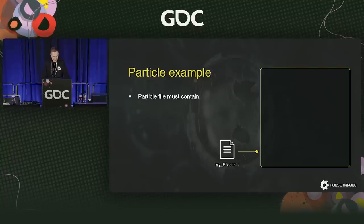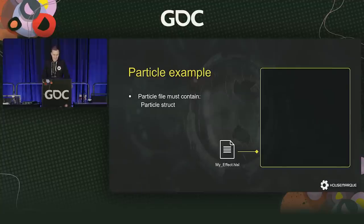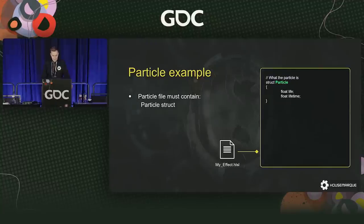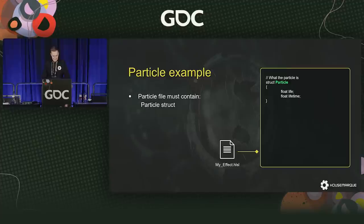Let's create a simple particle effect for our engine to give you an idea of how it actually works. You start by creating a text file. Inside that file, we need to define what the particle is by implementing a particle struct. The things inside the struct are particle variables — the data the particle can store and modify. You can add as many variables as you want, choosing their data types and names freely. Typical variables include life, lifetime, position, velocity, size, and color. None of these are required though — you'd survive with just a dummy variable.